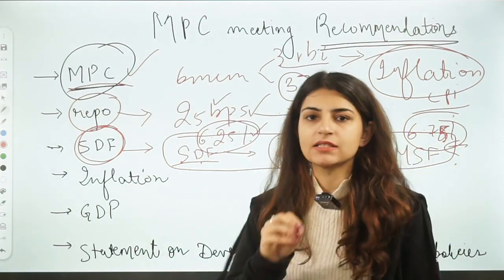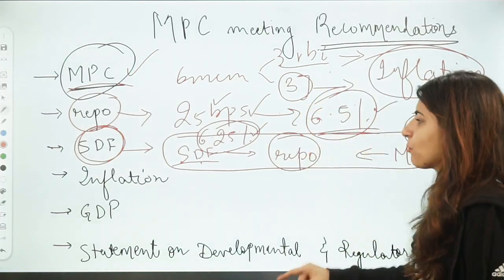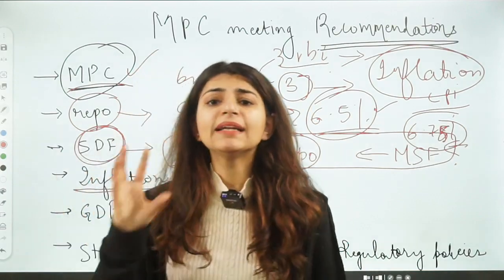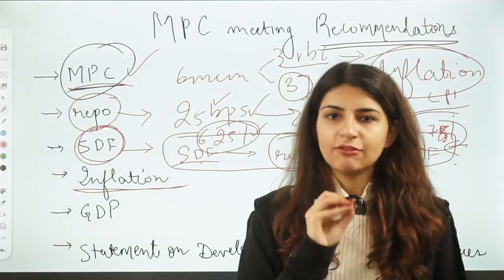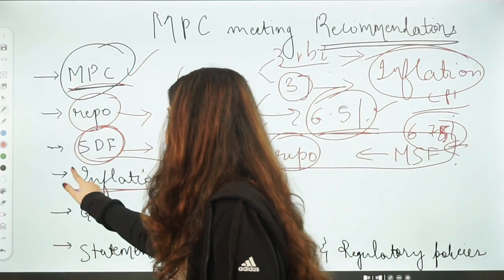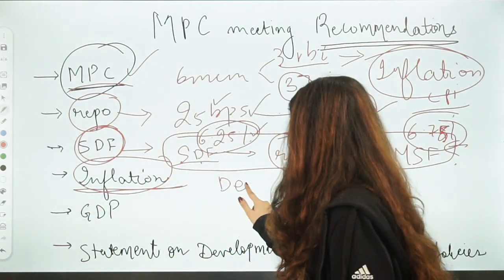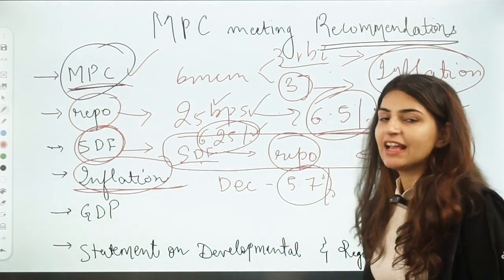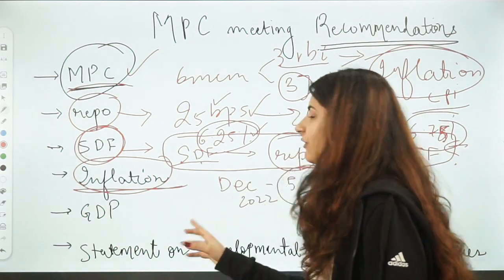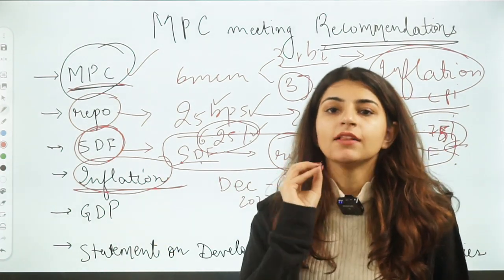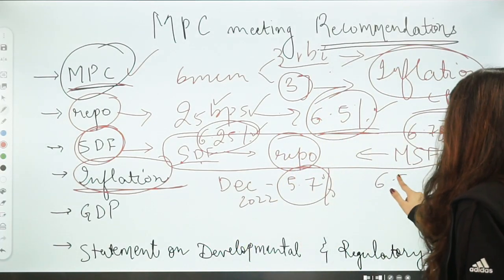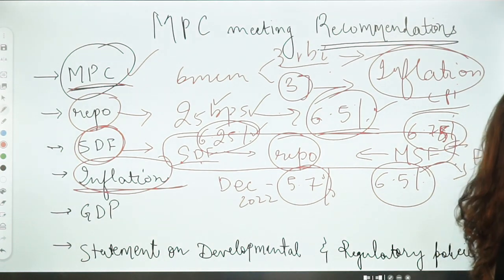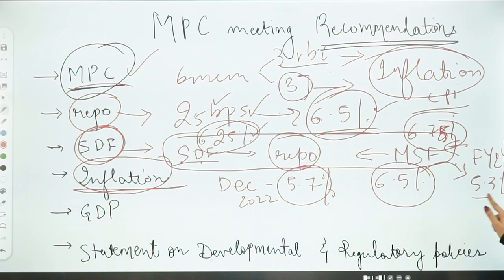The repo rate has been increased by 25 basis points and now stands at 6.5%. The meeting also talked about inflation expectations. Inflation in the month of December was 5.7%. The inflation for the entire fiscal year 2023 will be 6.5%, which will reduce to 5.3% in the next year, FY24.